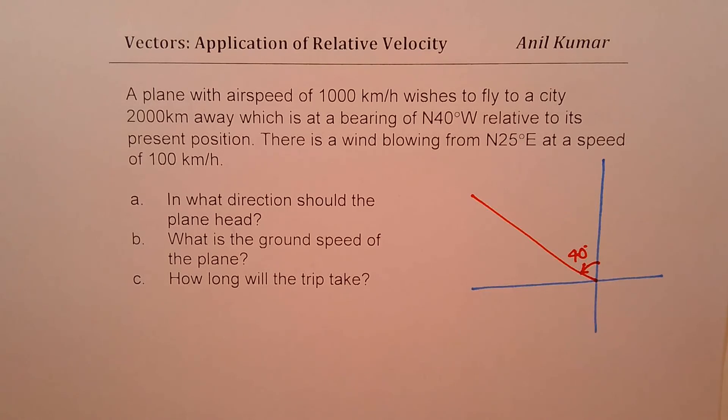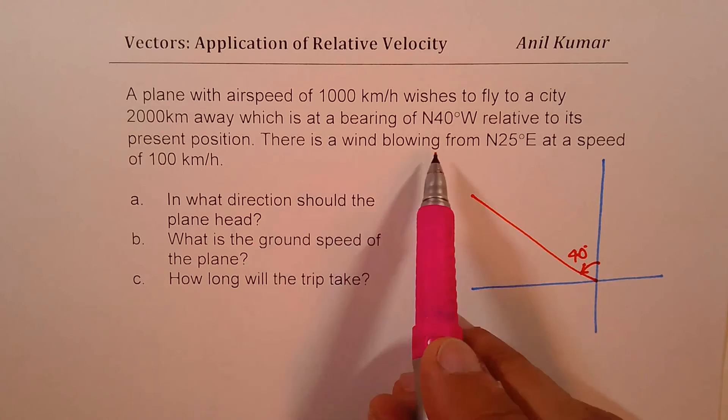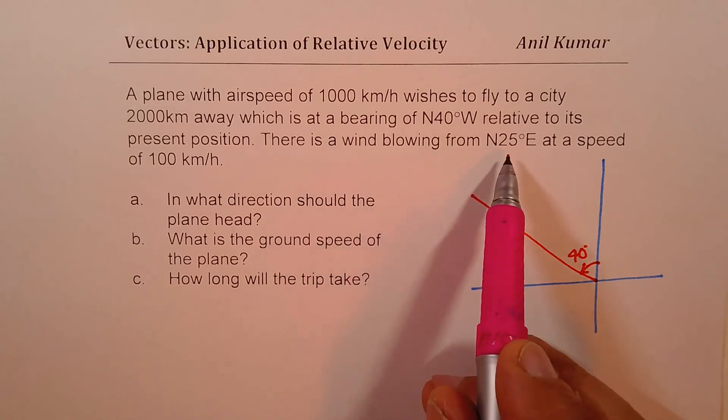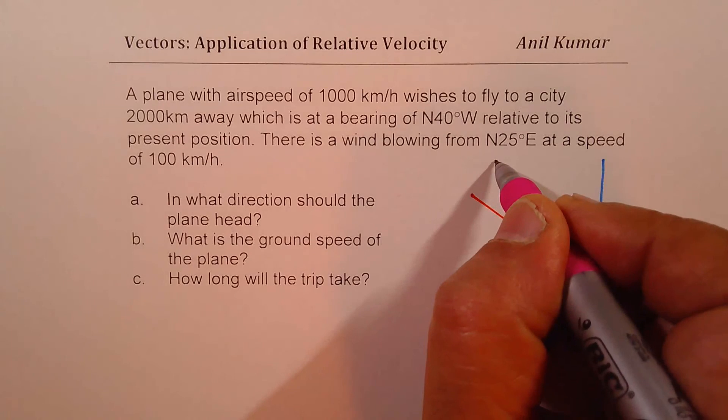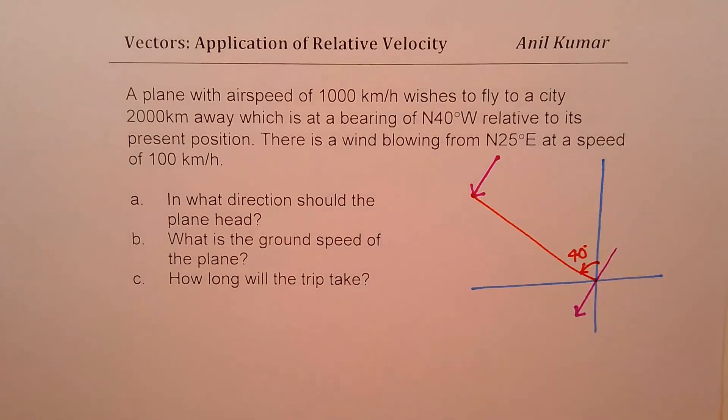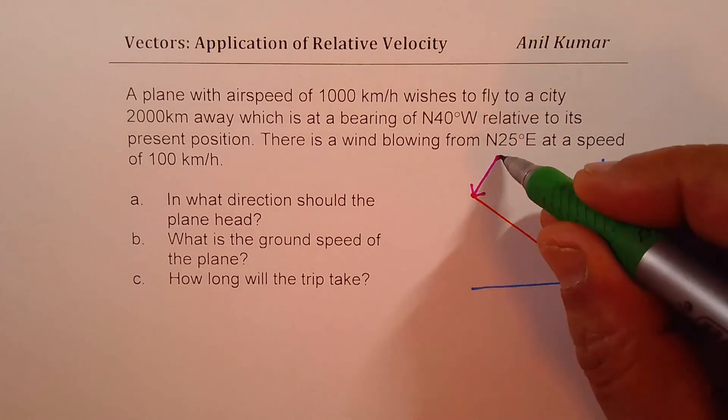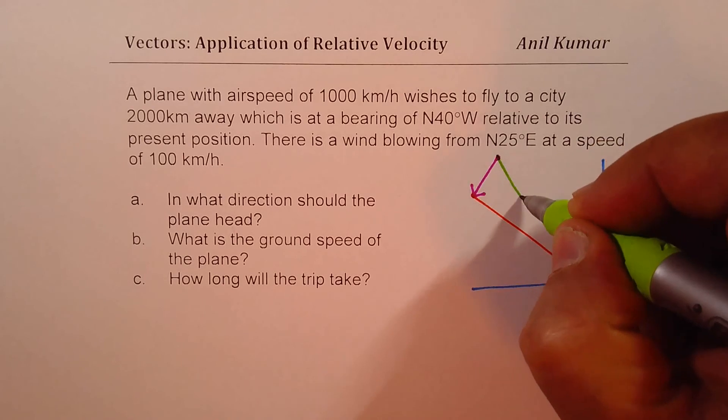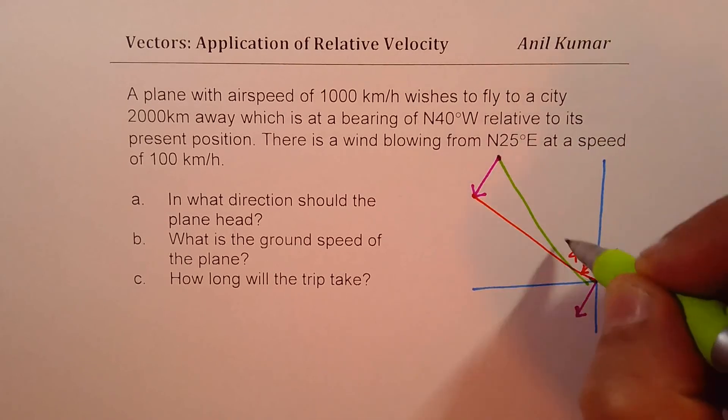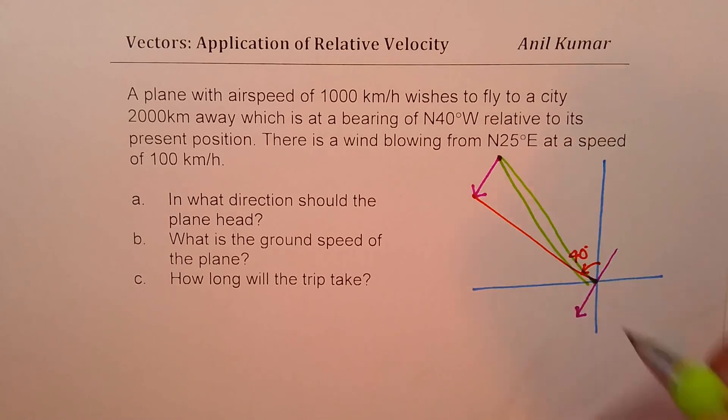Now, we are also given that the wind is blowing from north 25 degrees east. So let's say this is 25 degrees, the wind is blowing in this direction. So on the plane, that is the head of the plane, it can be shown like this, as the wind. Clearly, the plane has to head towards this direction. So plane has to head towards this point. So that is what you get.